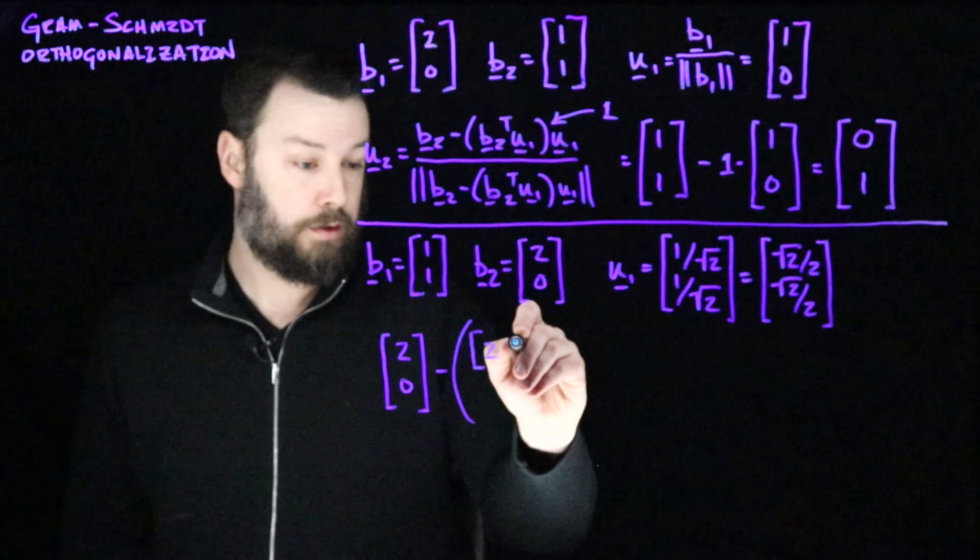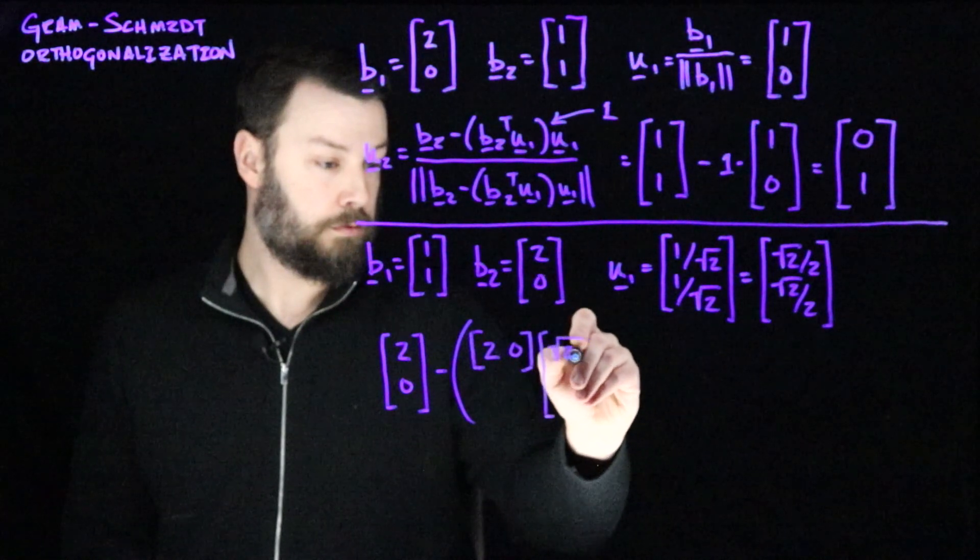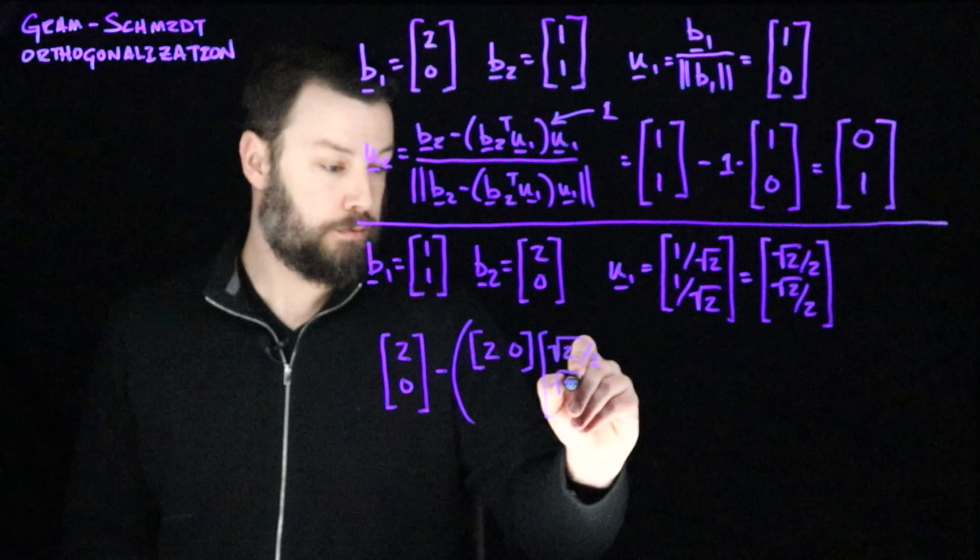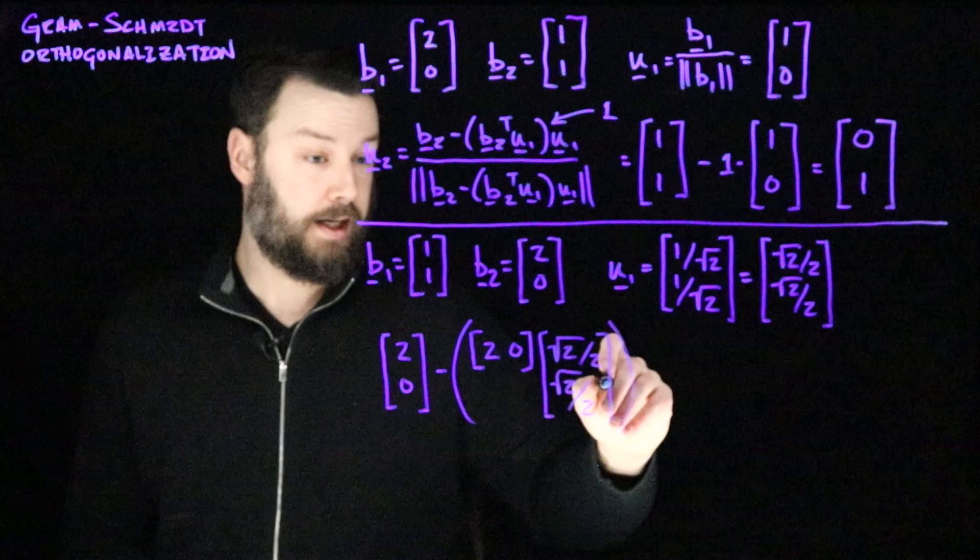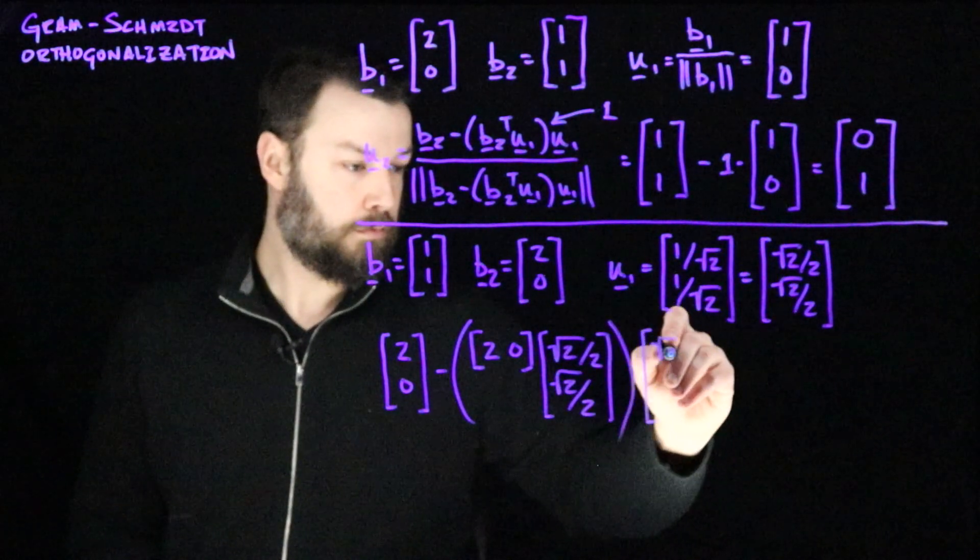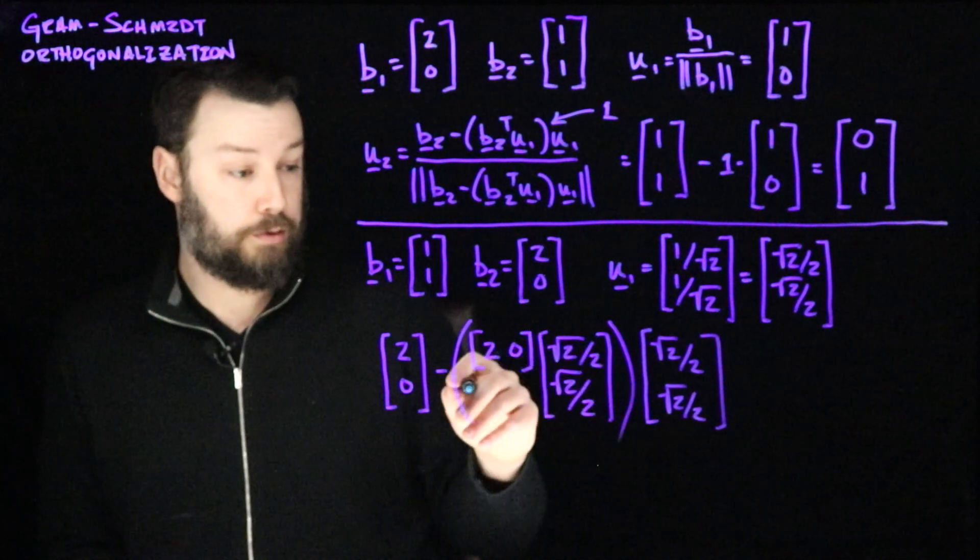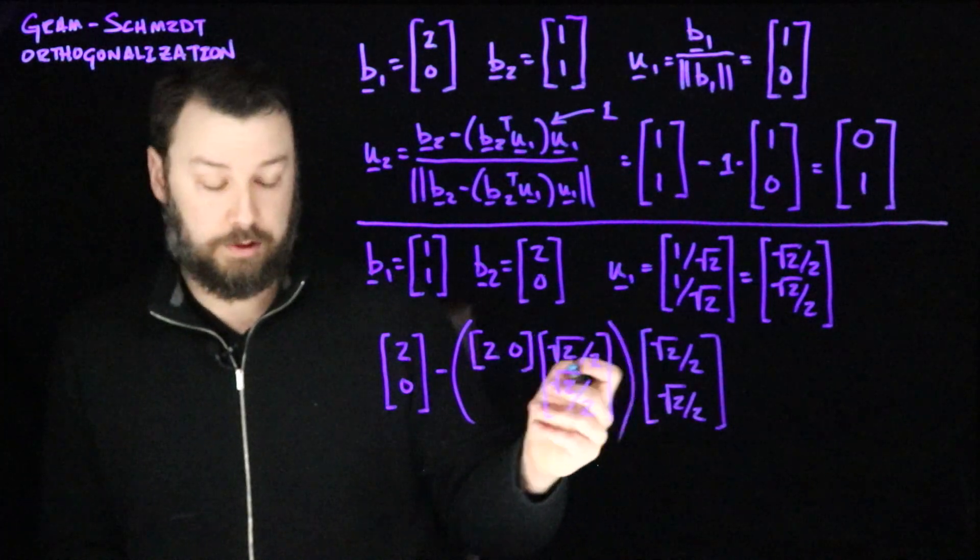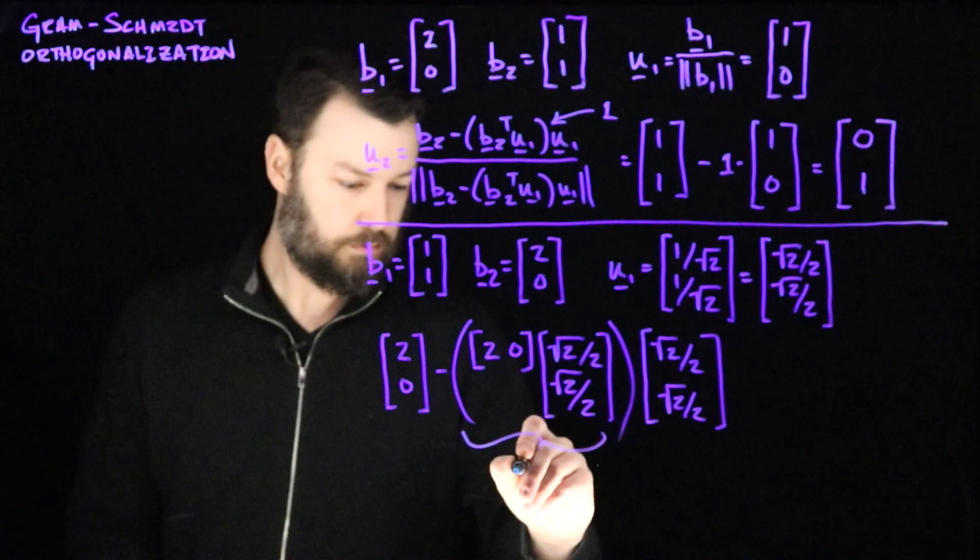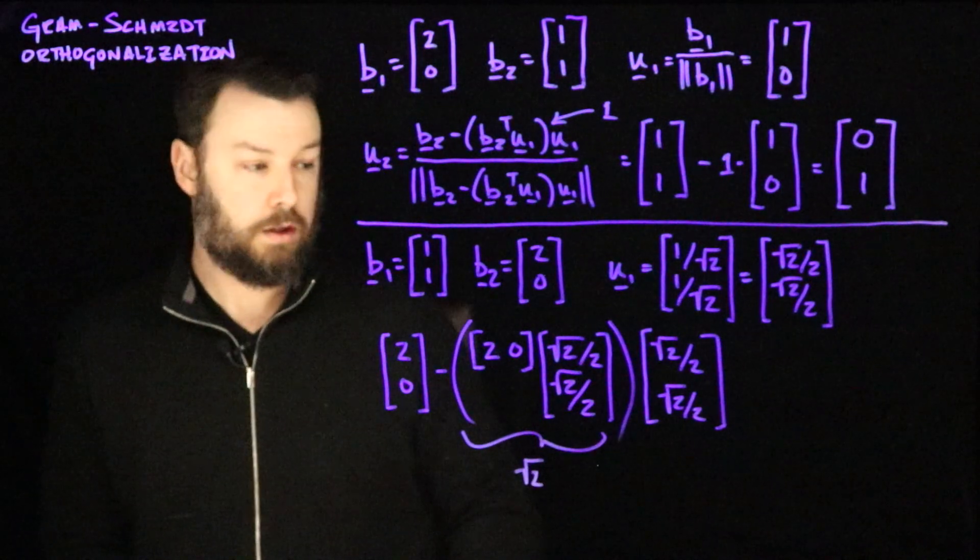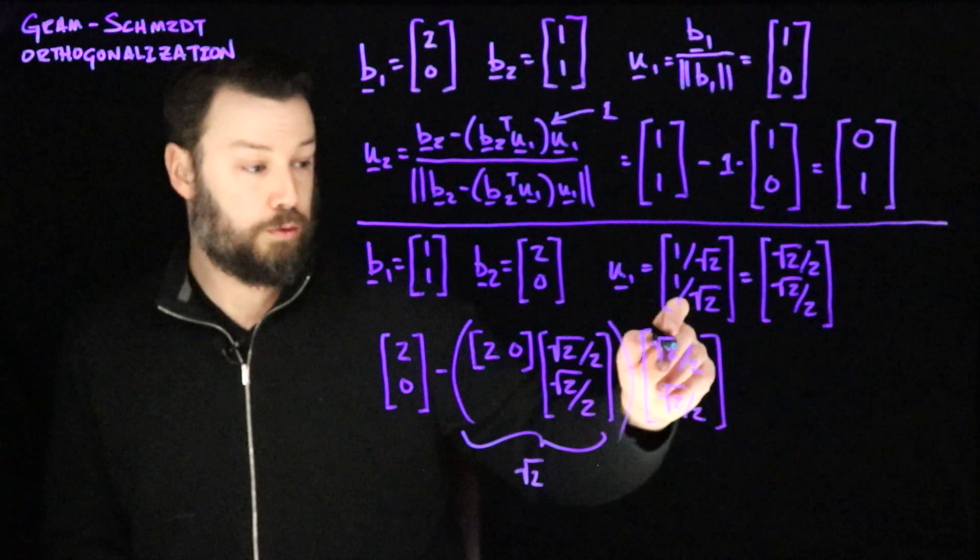And then we're multiplying that by root 2 divided by 2 and root 2 divided by 2. And then we're going to multiply that whole thing by the vector u1. So what's this first, this little inner product? Well, 2 times root 2 over 2 is going to be root 2, and then 0 times that is going to be 0. So this whole thing, this inner product, is just root 2.